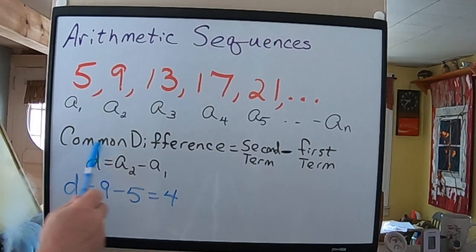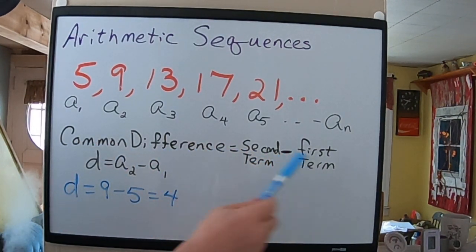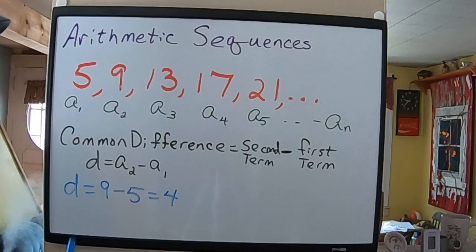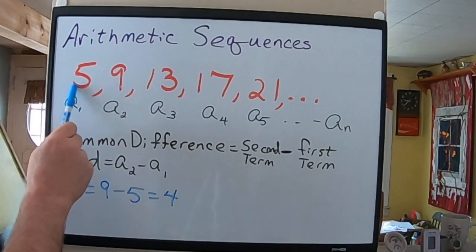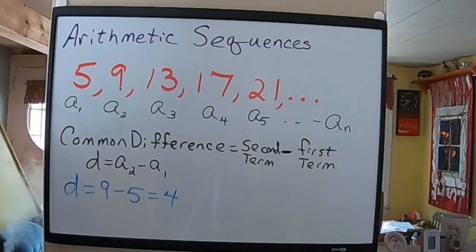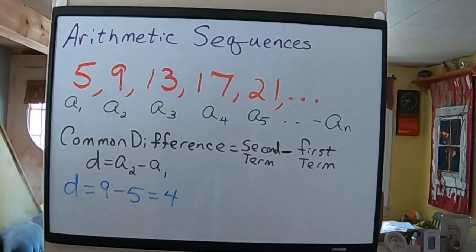So, common difference, second term minus first term, A sub 2 minus A sub 1, in this case, 9 minus 5. Make sure you put it in that order. It's going to mess you up if you don't. 9 minus 5 is 4. So, our common difference in this problem is 4.